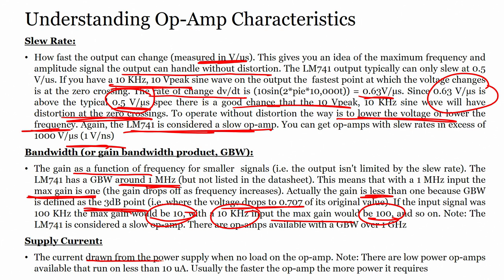Supply current is the current drawn from the power supply when there is no load on the op-amp. There are low-power op-amps available that run on less than 10 microamperes. Usually, the faster op-amp runs on more power. These are some of the parameters we were looking at in the data sheet.